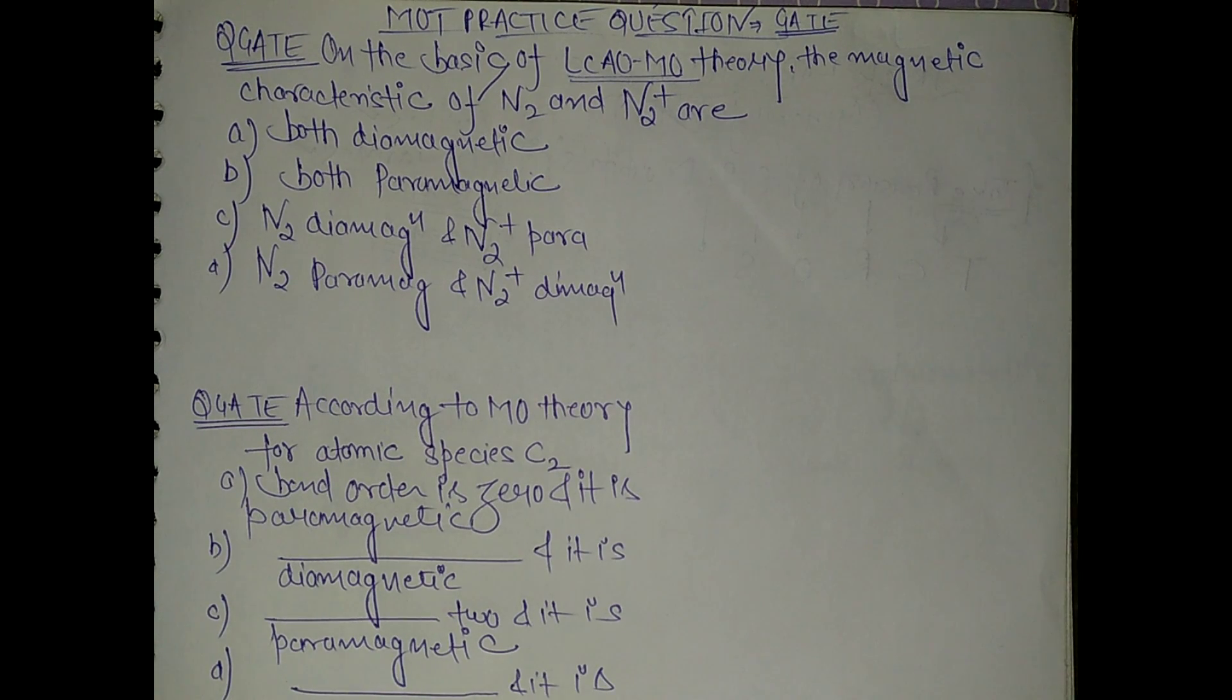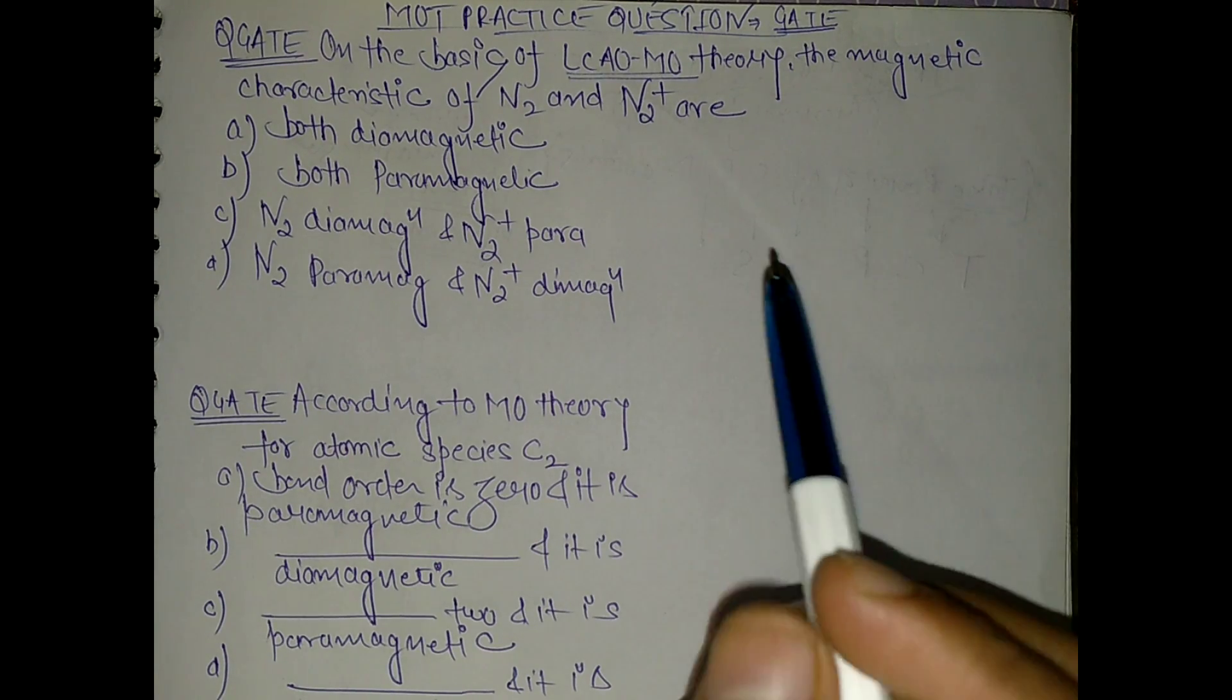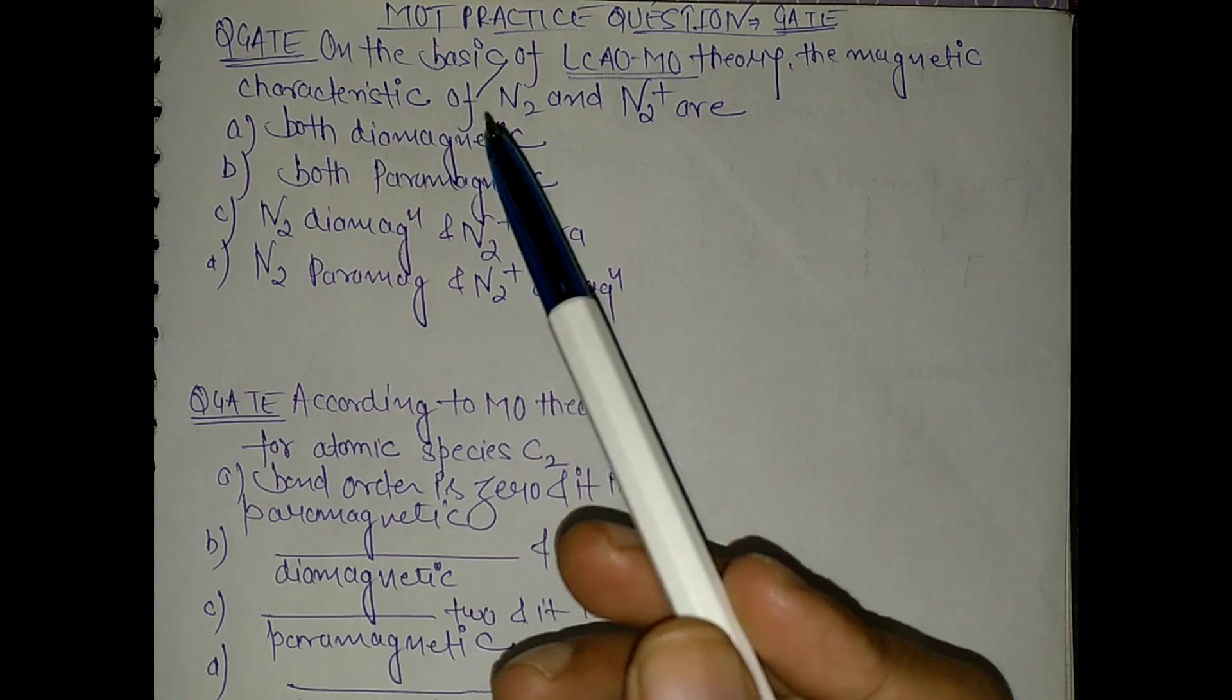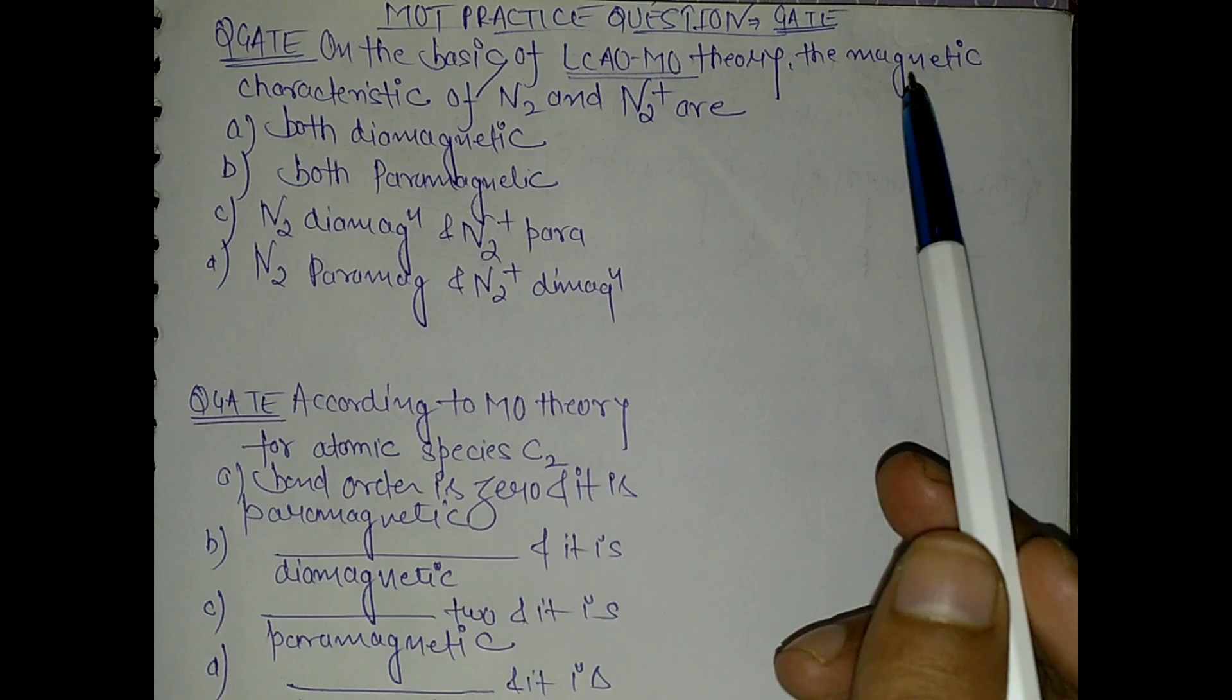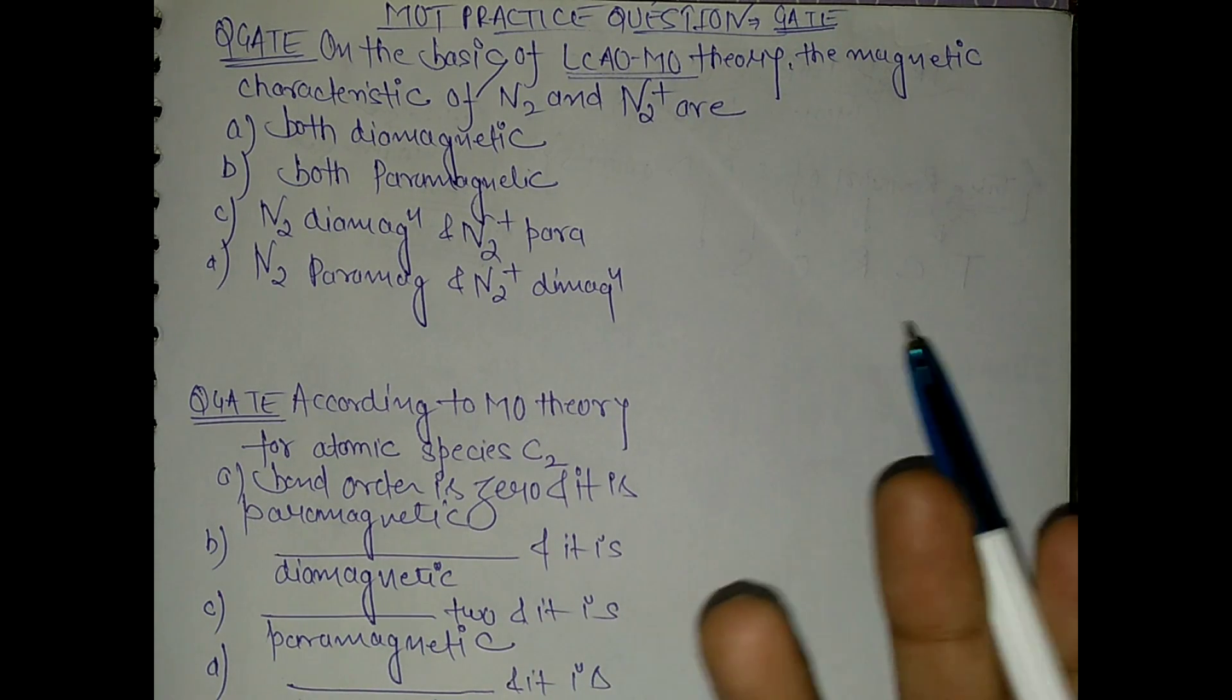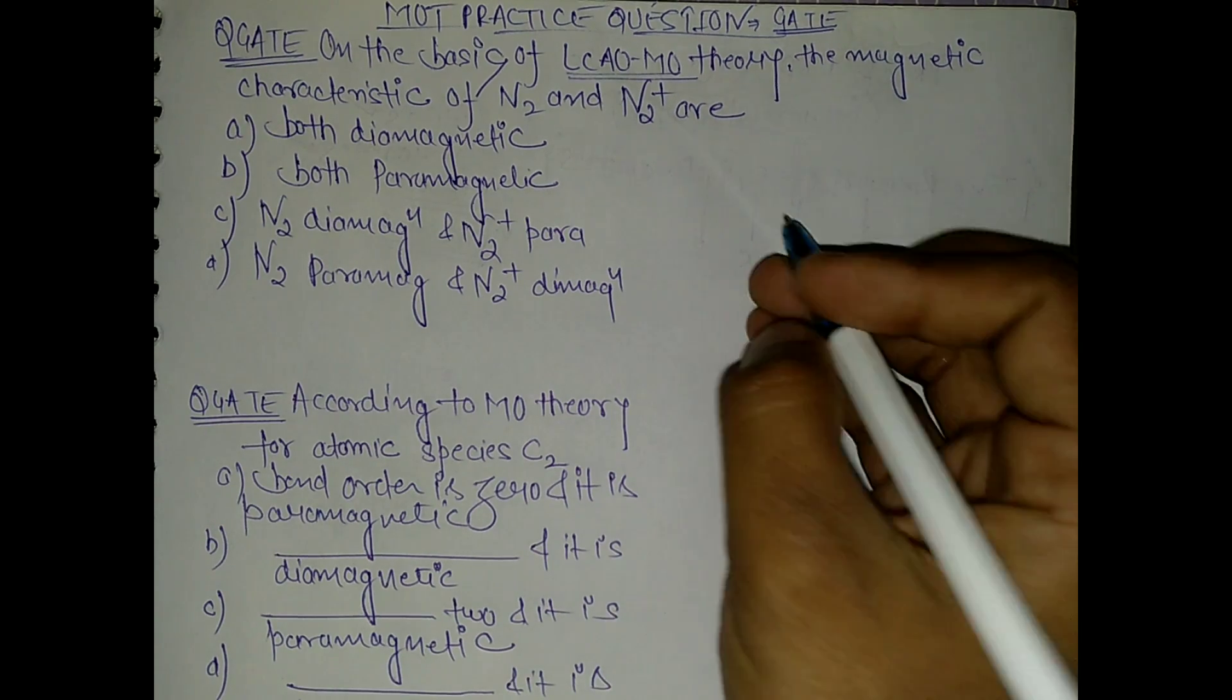Hello friends, let's do some practice problems on MOT or bond order or linear combination of atomic orbitals - both are the same thing. Now see, these are GATE questions from previous years. Let's go to the first question. On the basis of LCAO theory, the magnetic characteristics of N2 and N2 positive. I have already uploaded a video, so I'm doing just some practice questions. You can watch that video.